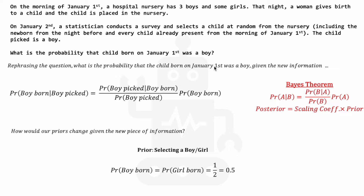So how would this new information change our posterior? The fact that a child picked randomly the next day turned out to be a boy implies that a boy was most likely to have been picked. This implies a boy majority, because the event that occurred is likely the one with the highest probability of occurring. Therefore, it implies at least a more than 50% chance of there being a boy majority.